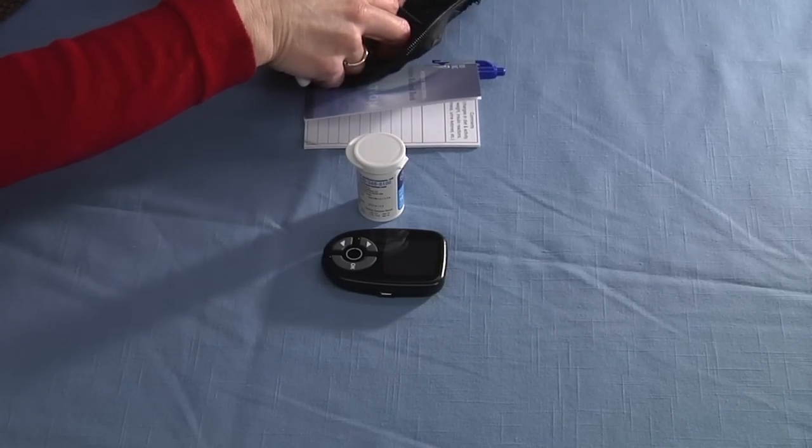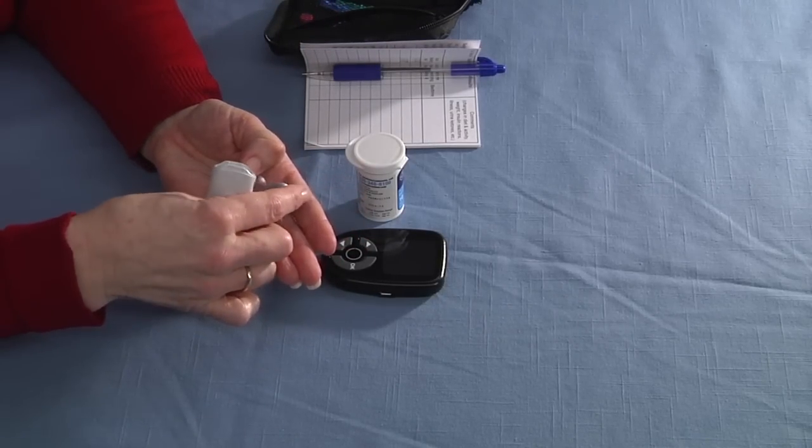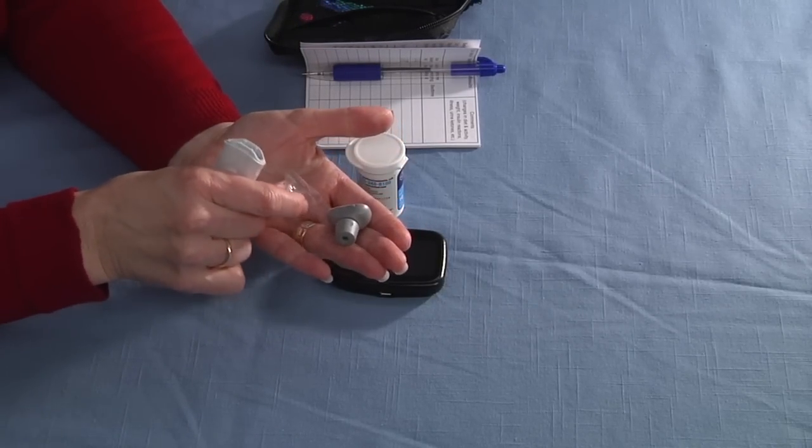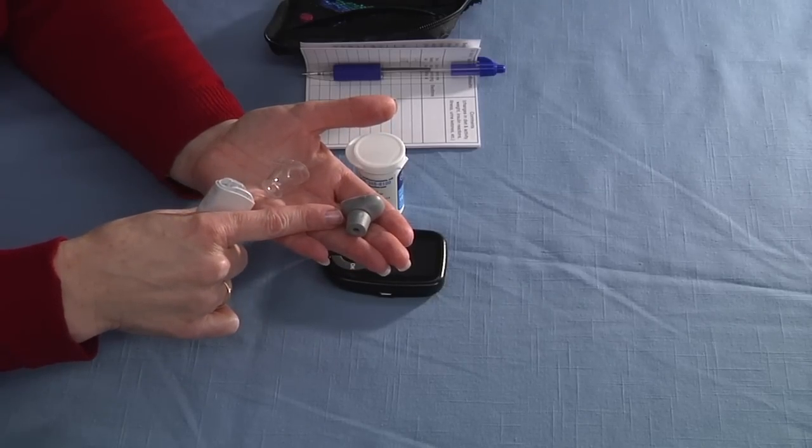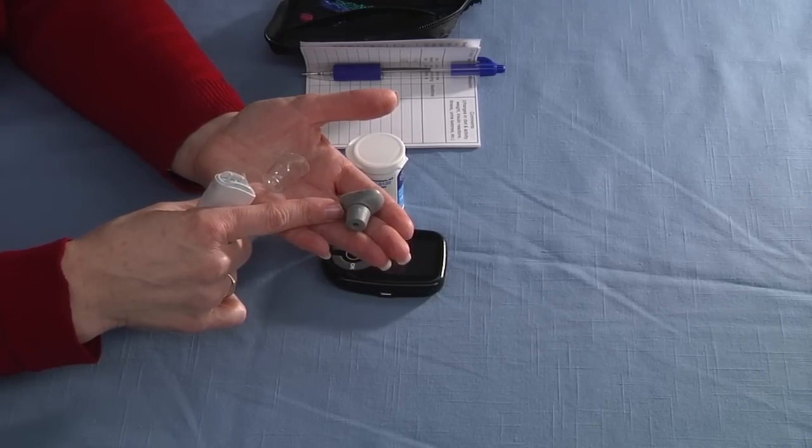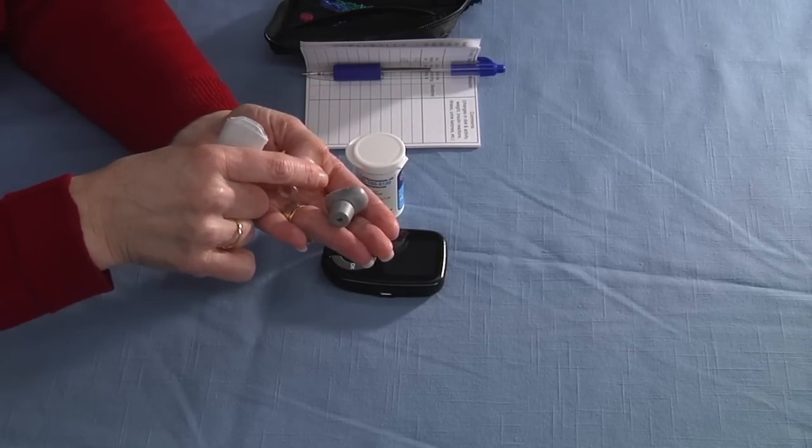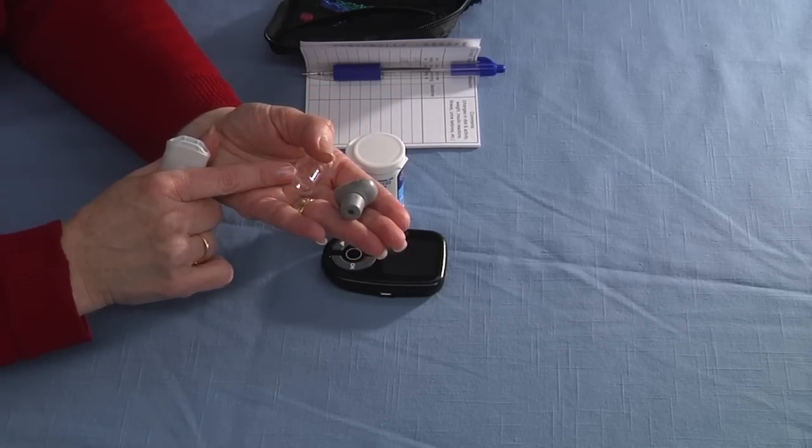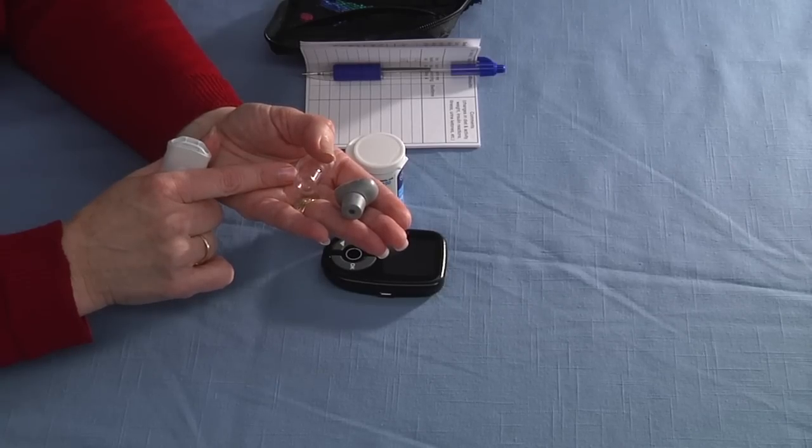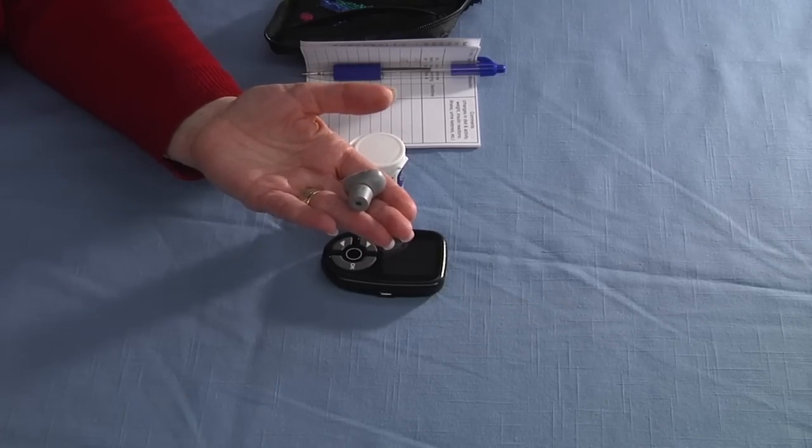Next you'll want to get out your lancet holder. This particular lancet holder comes with two different colored caps. The solid colored cap that I will be showing today is to be used on the sides of your fingers. The clear cap is to be used on sites when you're not using the sides of your fingers. Today I'm going to use the side of my fingers, so I'm going to take this one away.